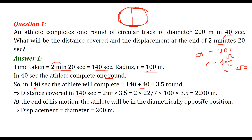After 3.5 rounds, the athlete goes for 3 full rounds and then 0.5 rounds, so the athlete is diametrically opposite. The displacement is the diameter, which is 200 meters.